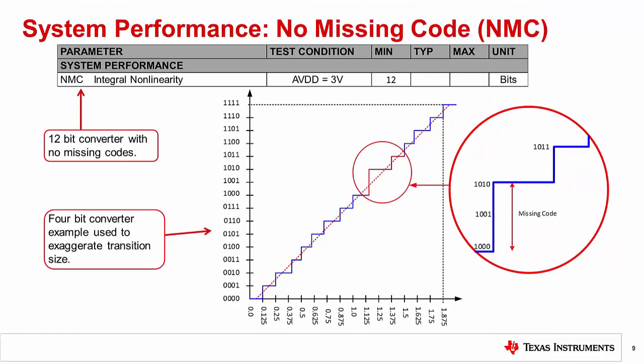In some cases, the differential nonlinearity is large enough to cause a code transition to be completely skipped. This is called a missing code. The example here shows a case where the digital output of the ADC completely skips the code 1001. In this example, there is no analog input signal that will ever cause the digital output to read 1001. Missing codes can be a serious issue for many electronic systems. So most modern ADCs are designed and tested to ensure that they will not have this problem.